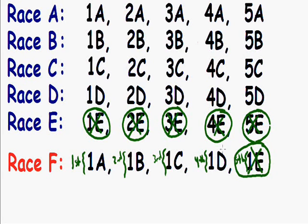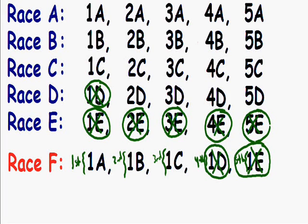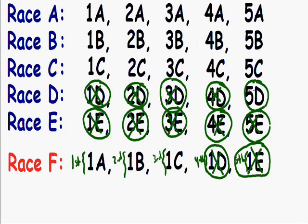Now let's take a look at runner 1D. He finished fourth place in this sixth race, so we know that at best he's the fourth fastest runner — he's definitely not top 3, so we can cross him off the list. And what does that tell us about runner 2D? If 1D is not a top 3 runner and 2D is slower than him, we know for a fact he's not top 3 as well. We can cross out every single person from race D.